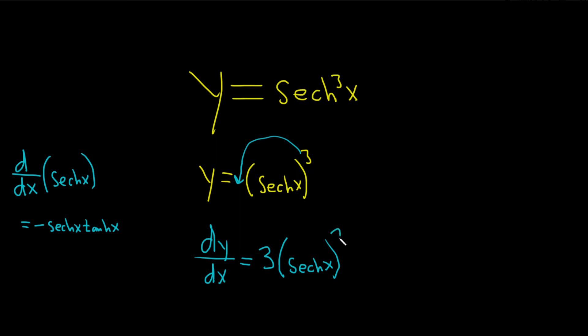And then we subtract 1 from the exponent. So 3 minus 1 is 2. And then times, now we multiply by the derivative of this inside function. The derivative of the inside function is right here. It's parentheses negative hyperbolic secant of x, hyperbolic tangent of x.